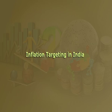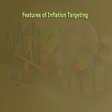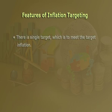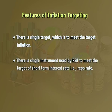Now let us look at inflation targeting in India. The Finance Minister announced inflation targeting in India in 2016. Under this, the government and RBI signed a memorandum of understanding for adopting cooperative policies to meet the inflation target. The main features are: number one, there is a single target, which is to meet the target inflation; number two, there is a single instrument used by RBI—the short-term interest rate, that is the repo rate; and number three, there is a single objective, which is price stability.